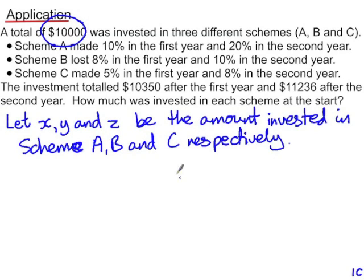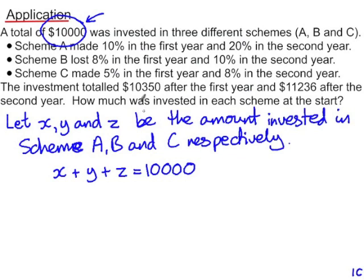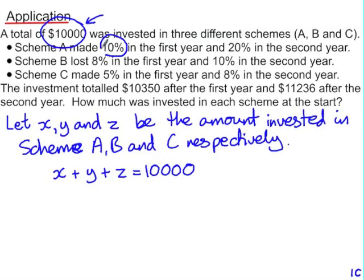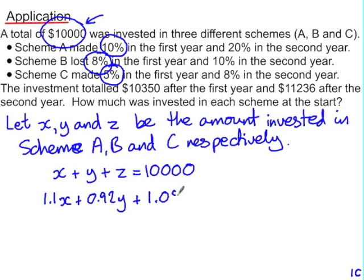We know that x, y, and z must total $10,000. Then in the first year, scheme A made 10%, so x has been increased by 10%, which means it's now 1.1x. Scheme B lost 8%, so y is now 0.92y. And scheme C made 5%, so z has been increased to 1.05z. The total value of the investment after that first year is $10,350.